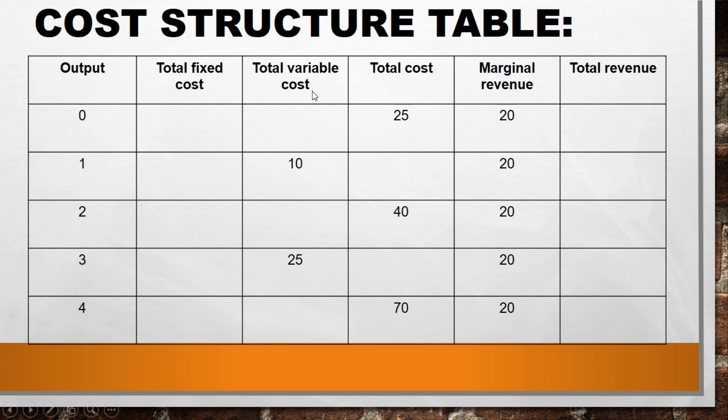You are also provided with total cost. Total cost is the sum of total fixed cost and total variable cost. So if you take total fixed cost and add total variable cost, you get your total cost for that firm. You also have marginal revenue and total revenue, which we have not discussed in our previous lesson.